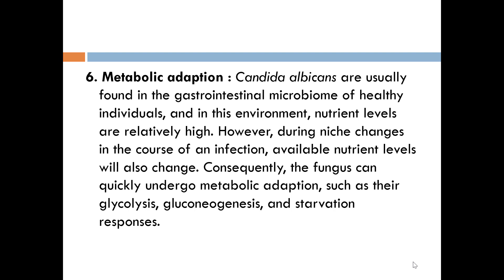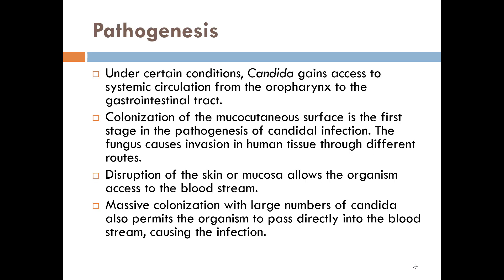Next is metabolic adaptation. Candida albicans has excellent metabolic adaptability — it can adapt to both low- and high-nutrition situations. For example, it can grow in the blood where there is high glucose, but when engulfed by macrophages or neutrophils where glucose is low, Candida albicans switches off glycolysis and adapts to those conditions as well.